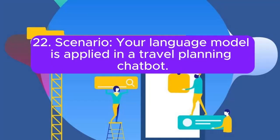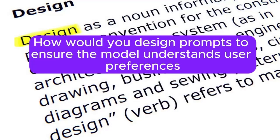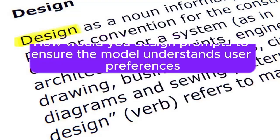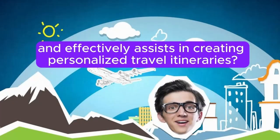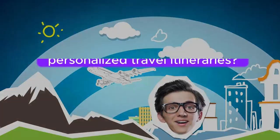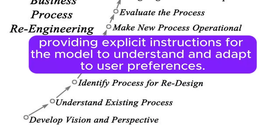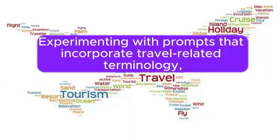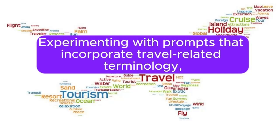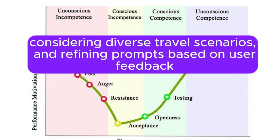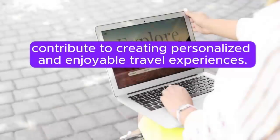Scenario 22: Your language model is applied in a travel planning chatbot. How would you design prompts to ensure the model understands user preferences and effectively assists in creating personalized travel itineraries? Answer: Crafting prompts for a travel planning chatbot involves providing explicit instructions for the model to understand and adapt to user preferences. Experimenting with prompts that incorporate travel-related terminology, considering diverse travel scenarios, and refining prompts based on user feedback contribute to creating personalized and enjoyable travel experiences.